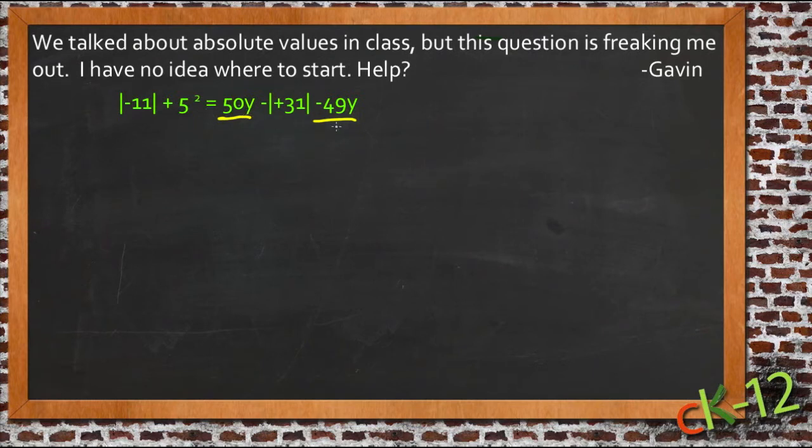So if we do that first, we already have things simplified dramatically, because we go from 50y and 49y to just y on that side. Then all we have left is minus the absolute value of plus 31.